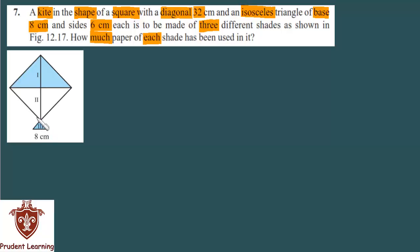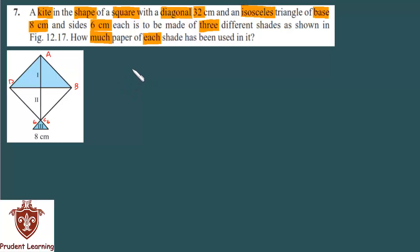The isosceles triangle has 3 sides mentioned — the base is 8 cm and the other two sides are the same, 6 cm each. The upper square part is ABCD. The square has two diagonals: one diagonal is AC and one diagonal is BD. We know that the two diagonals of a square are equal in length — diagonals of a square are equal.